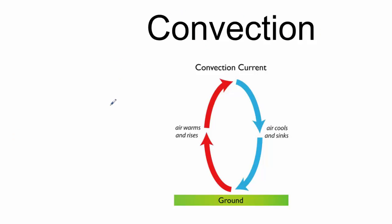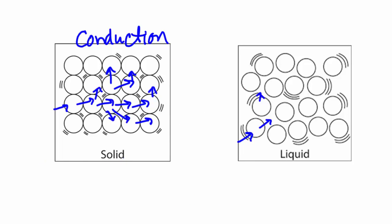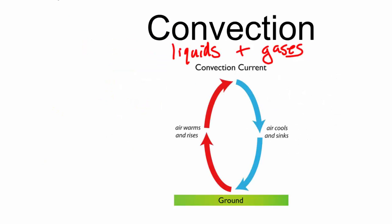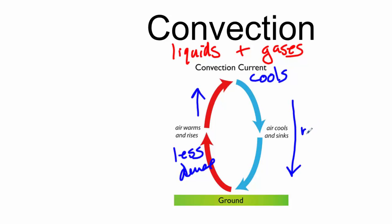Convection, we've already talked about that. This is all about density. In convection, the air, gas, or liquid rises. Convection works more with liquids and gases. With conduction it's mainly solids; with convection it's liquids and gases. So these liquids and gases get heated up, they become less dense, they rise or float, they cool, and then begin to sink as they become more dense.